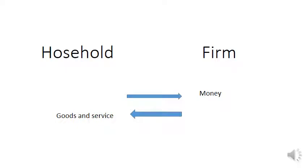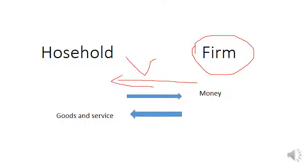Now let's talk about the firm. A firm is a company that uses the four factors of production to produce goods and services. These goods and services are sold in the market to households. The firm receives profit — money — in return for these goods and services.